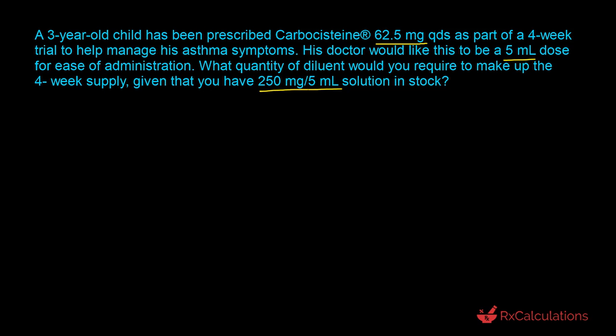For our purposes, the goal is to determine what volume of diluent is needed to change the concentration from 250 milligrams per 5 ml down to 62.5 milligrams per 5 ml. The strategy we want to use here is the algebraic method.